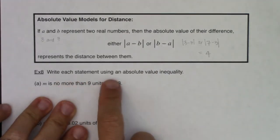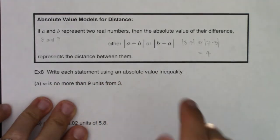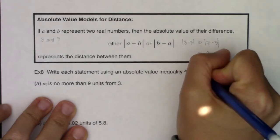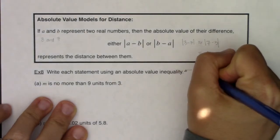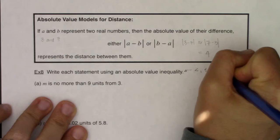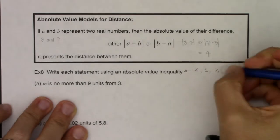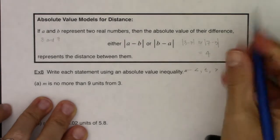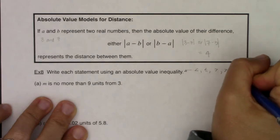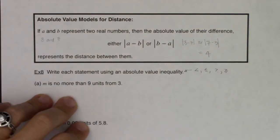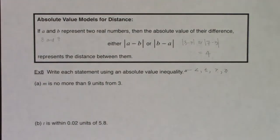We're going to write each statement using an absolute value inequality. When you hear inequality, it means you get to choose between the symbol less than, less than or equal to, greater than, or greater than or equal to. Those are your four options for an inequality, versus an equality, you just get the equal sign.